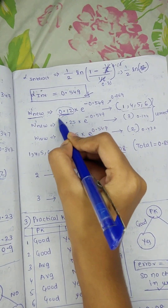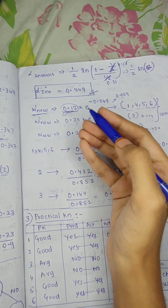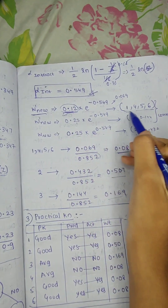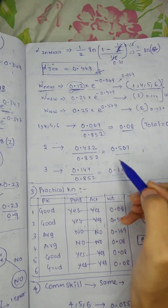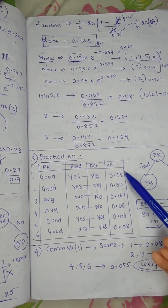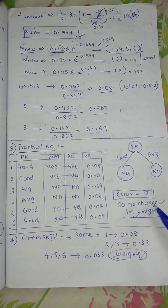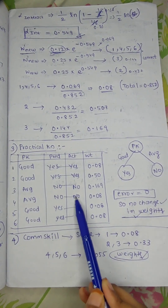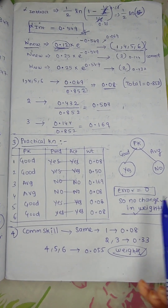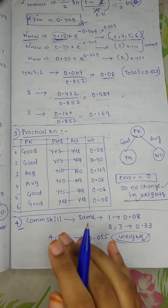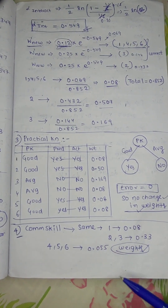Again, after calculating new weights, normalize them by dividing each by the total. You will get updated weights. For the practical knowledge feature, if you see there is no difference between predicted and actual values — all are correct — so error equals 0, and there is no change in weights. For the fourth feature, repeat the same process. After repeating for all features, you will get some final finalized weights.